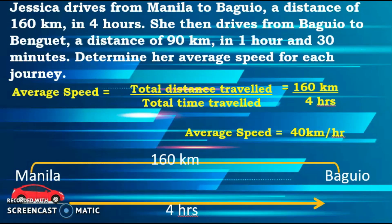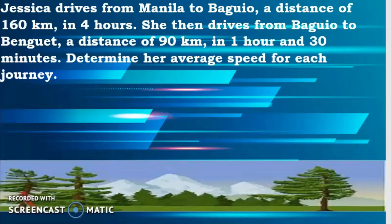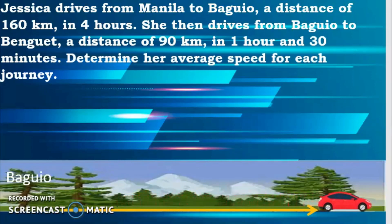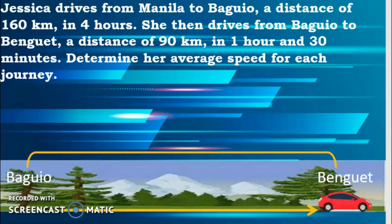So from Manila to Baguio, her average speed is 40 kilometers per hour. She then drives from Baguio to Benguet at a distance of 90 kilometers in 1 hour and 30 minutes.